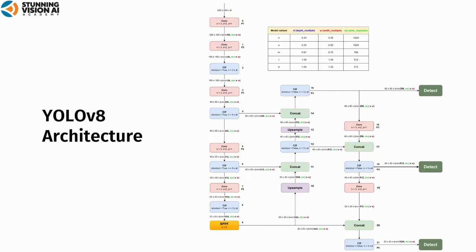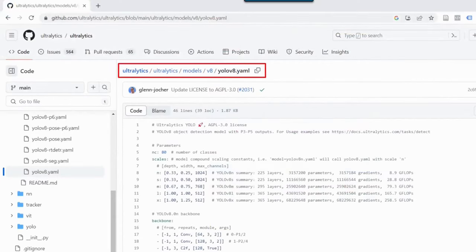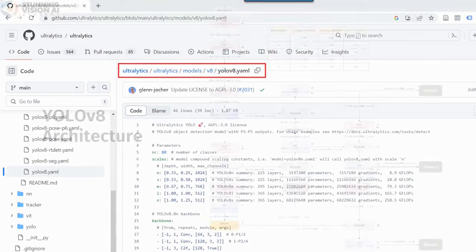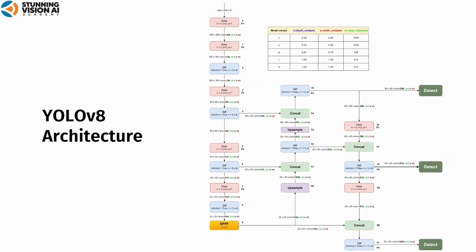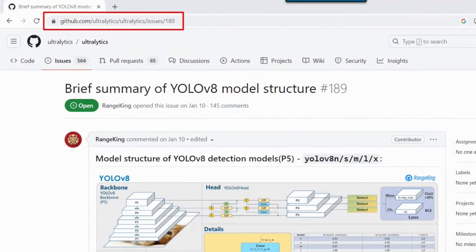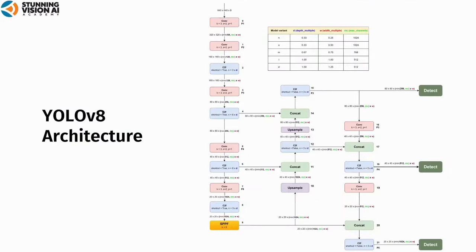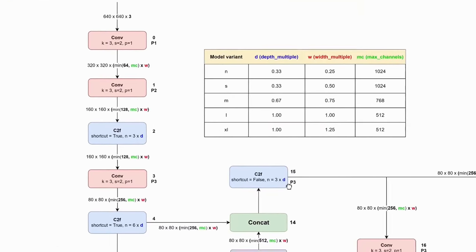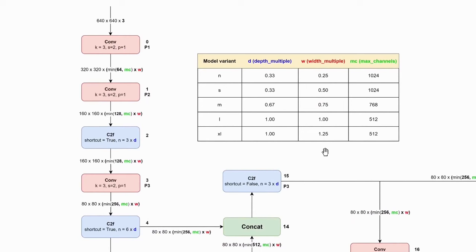I will explain the whole YOLOv8 architecture. This architecture drawing is based on the YOLOv8 architecture file, yolov8.yaml, located in the models/v8 folder. It is also heavily inspired by the drawing from Rains King, a GitHub user who posted an issue in the YOLOv8 GitHub repository. The explanation begins with three parameters that define the YOLOv8 variant: depth multiple, width multiple, and max channels. The depth multiple parameter determines how many bottleneck blocks are in the C2F block. The width multiple and max channels parameters determine the output channel.